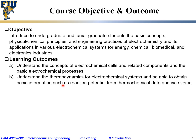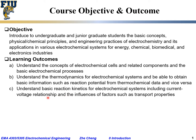The second outcome is to understand the thermodynamics of electrochemical systems and be able to obtain basic information such as cell equilibrium and cell potential from thermochemical data — including entropy, Gibbs free energy — and vice versa: once we have the measured cell potential, how do we get the fundamental thermochemical data through electrochemical methods.